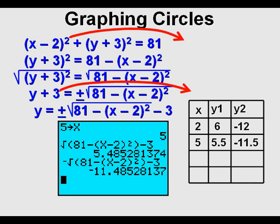For x equals 5, we get y1 equal to about 5.5, and for y2 we get about negative 11.5.